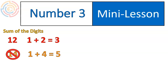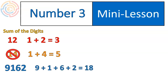Now, you might say this is a little bit of extra work, but if you get a large number and you maybe don't know your 3 times tables up to 9,000, that's okay, because you can add up all of the digits. 9 plus 1 plus 6 plus 2 equals 18. And if you add the digits again — 1 plus 8 gives you 9 — and you know 9 has a factor of 3, so therefore 9,162 has a factor of 3.